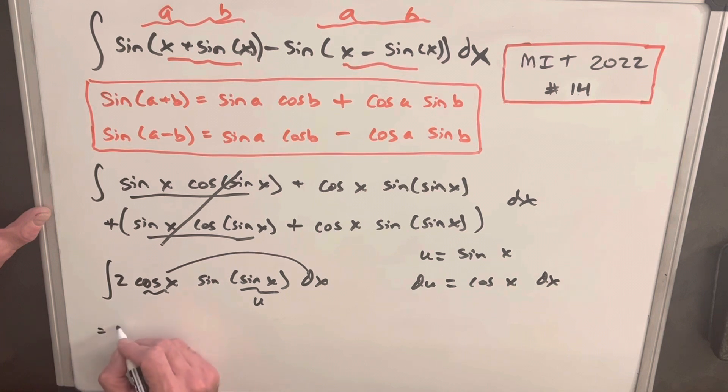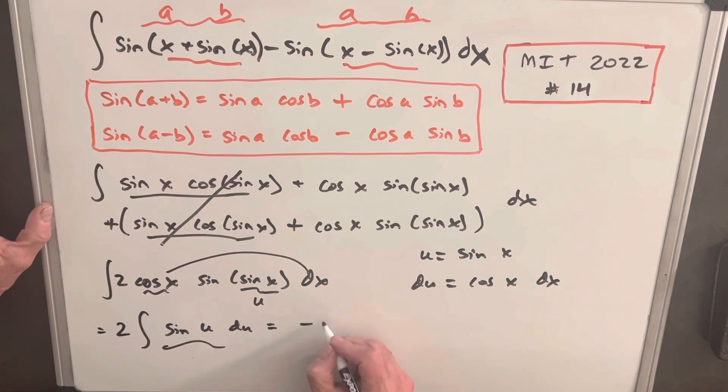So we can rewrite this whole thing. We'll bring our 2 outside, so we're going to have 2 sin(u) du, and now we've got a very simple integral. To finish this off, we'll just integrate and we'll have -2 cos u + c.